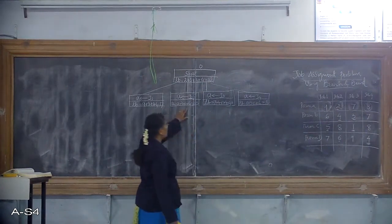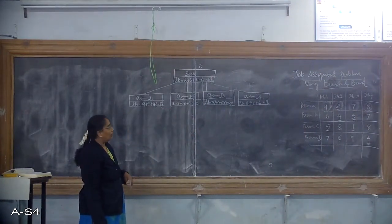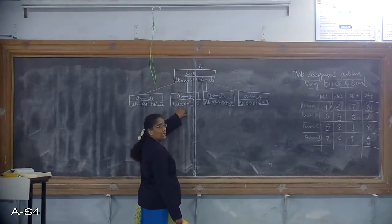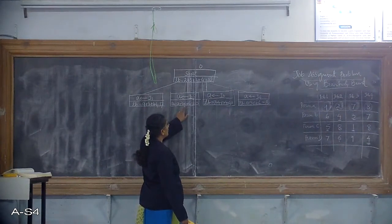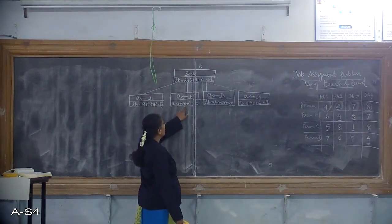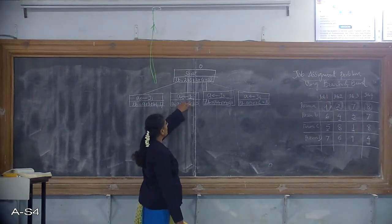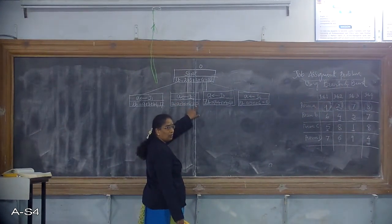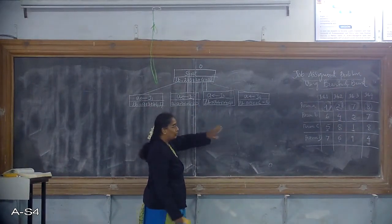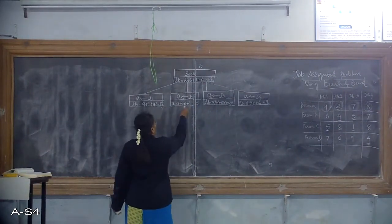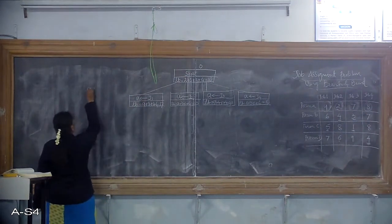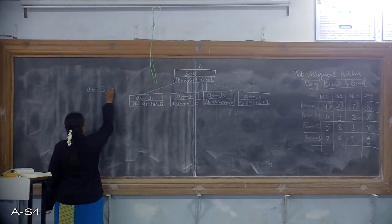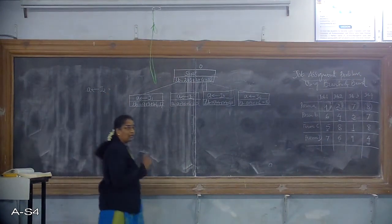Out of these four nodes, I am going to pick the node with the smallest lower bound value for the next level of exploration, which is the second node. When I assign job J2 to person A, it gives the lower bound value of 10, which is the smallest. So job J2 is assigned to person A.